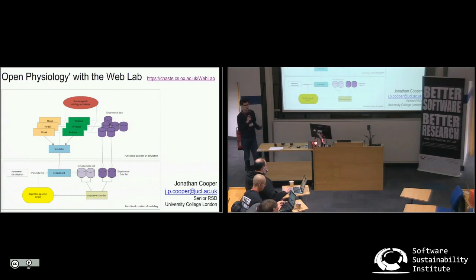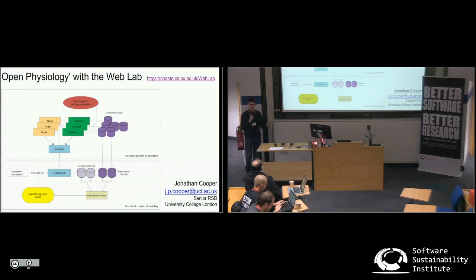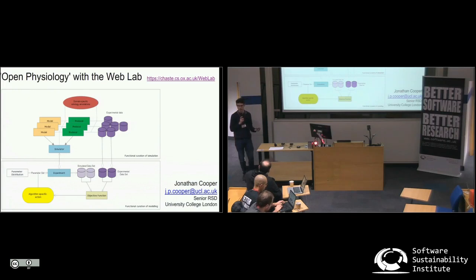You have experimental groups studying different biological systems — how do you encourage them to make their data open in a way that's actually usable for others, not just deposited somewhere because the funders require it, but where you can't really make head or tail of what's going on with it? The motivation we're coming to is: what if releasing their data actually enables them to get more value from it themselves, and see what other things it could be useful for?